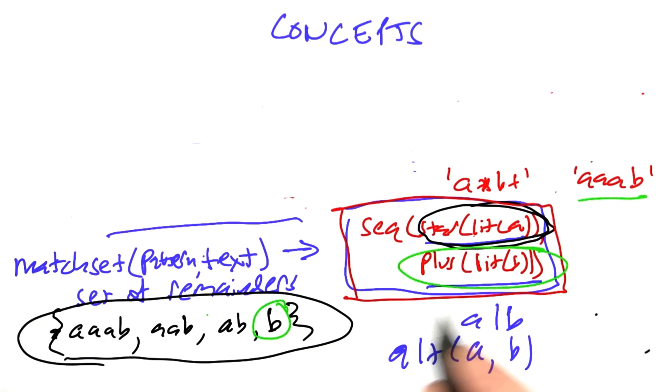And the result from the match of the sequence of x and y will be the set consisting of just the empty string because we've matched off all the a's and one b, and there's no remainder left over.